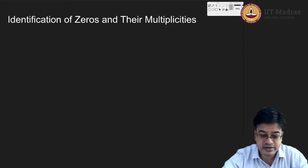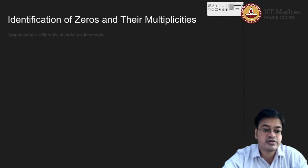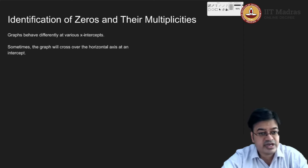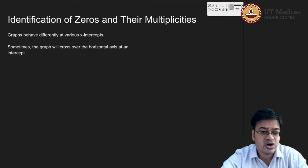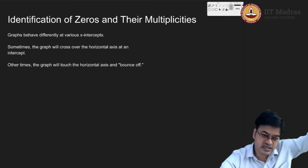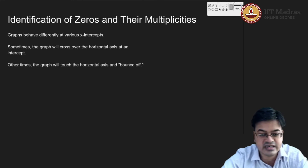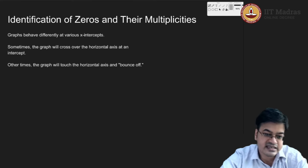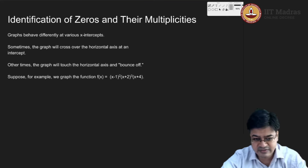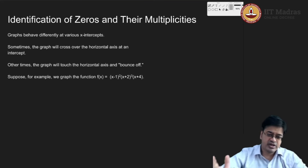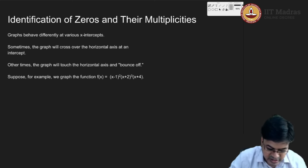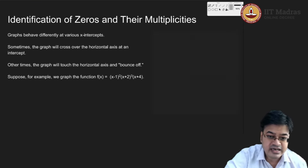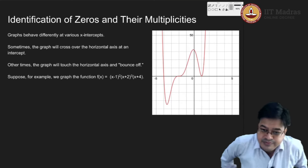Is it related to the factor appearing multiple times? That is what we will try to see. As mentioned in the earlier slide, the graph can cross over the horizontal axis, or it may bounce off — meaning it will touch and go up, tangential to that axis. So why is this happening at the x-intercept? To make the understanding clear, we will write a polynomial in factored form: x minus 1 squared, times x plus 2 cubed, times x plus 4, and draw that polynomial using a graphing tool.